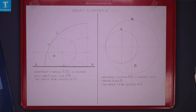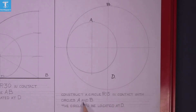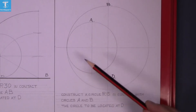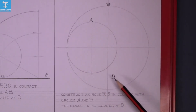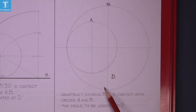The next question is to construct a circle of radius 15 in contact with circles A and B. Circle A is here, circle B is in this position. The new circle will be in contact with both circles and located at point D, down in this position.